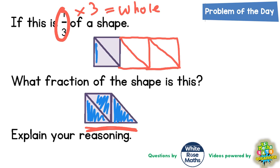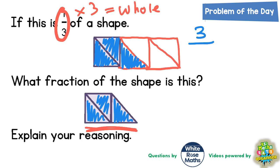So if we go back to the whole shape, which has six triangles in it, and shade in three of them — one, two, three — we're basically shading in three out of the six triangles on the whole shape.